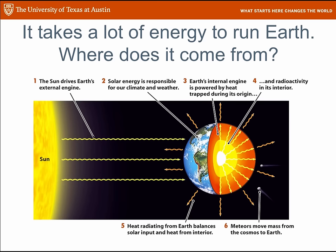It takes a lot of energy to run earth. Where does the energy come from? Two sources. One source is the sun — this is the external heat engine of earth, and it provides the vast majority of energy that runs earth's systems. And the earth's internal heat engine, which is the heat from the core, is a very small but important part of earth's energy as well.